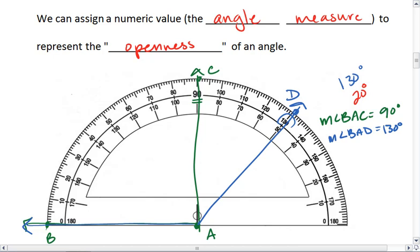And lastly, 20 degrees. I'm going to go ahead and use a different ray over here. We'll use ray AE, and then have this side extend through the 20. We'll label that F. So the measure of angle FAE equals 20 degrees.